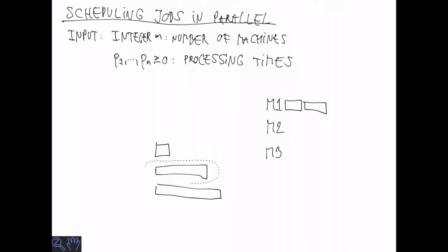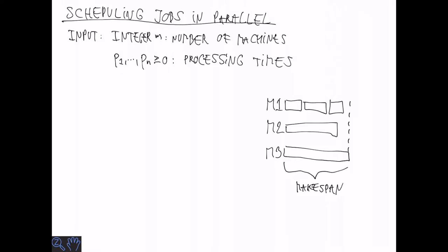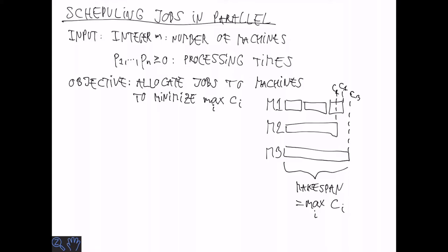So for example, we could allocate the jobs like this, and that would give a certain makespan, which is the maximum processing time for any machine. The objective is to allocate jobs to machines to minimize the maximum makespan.